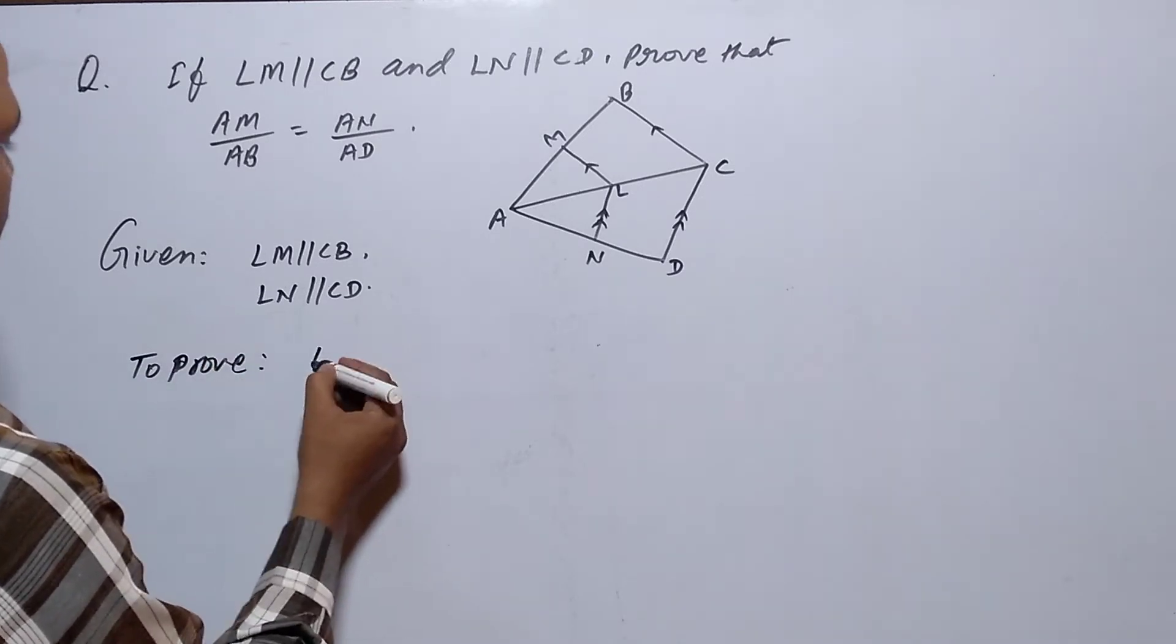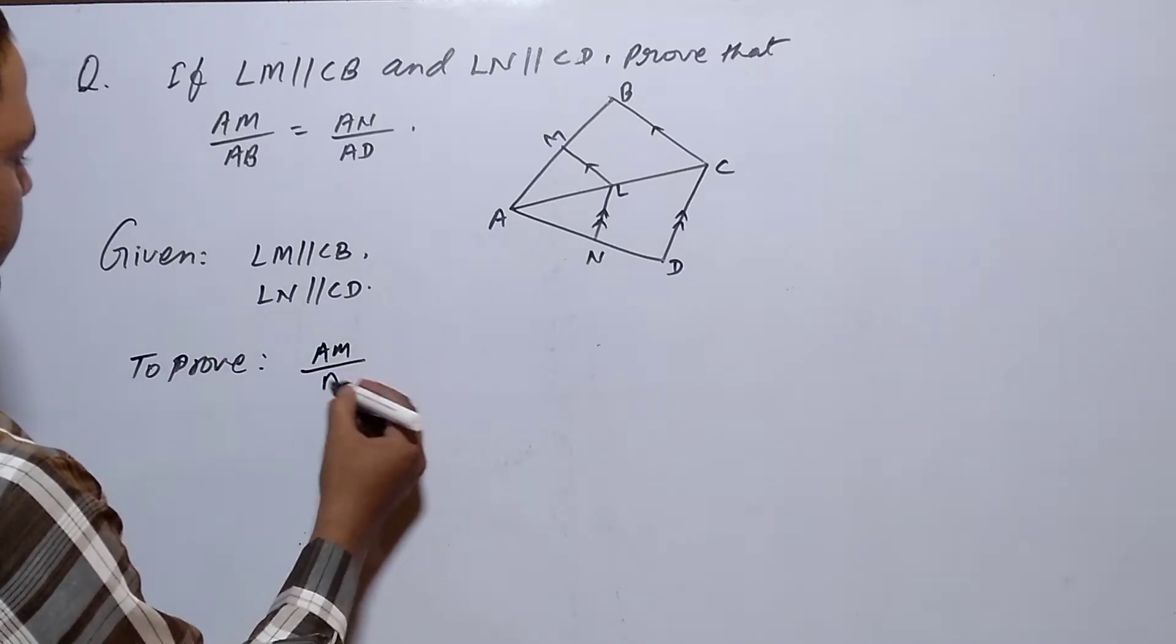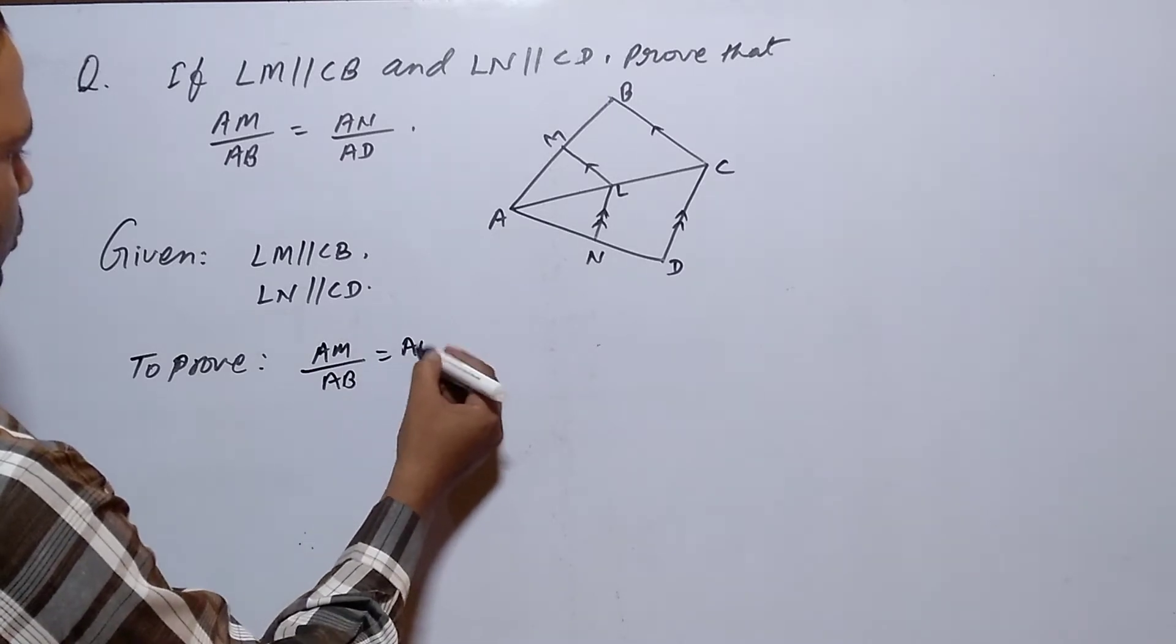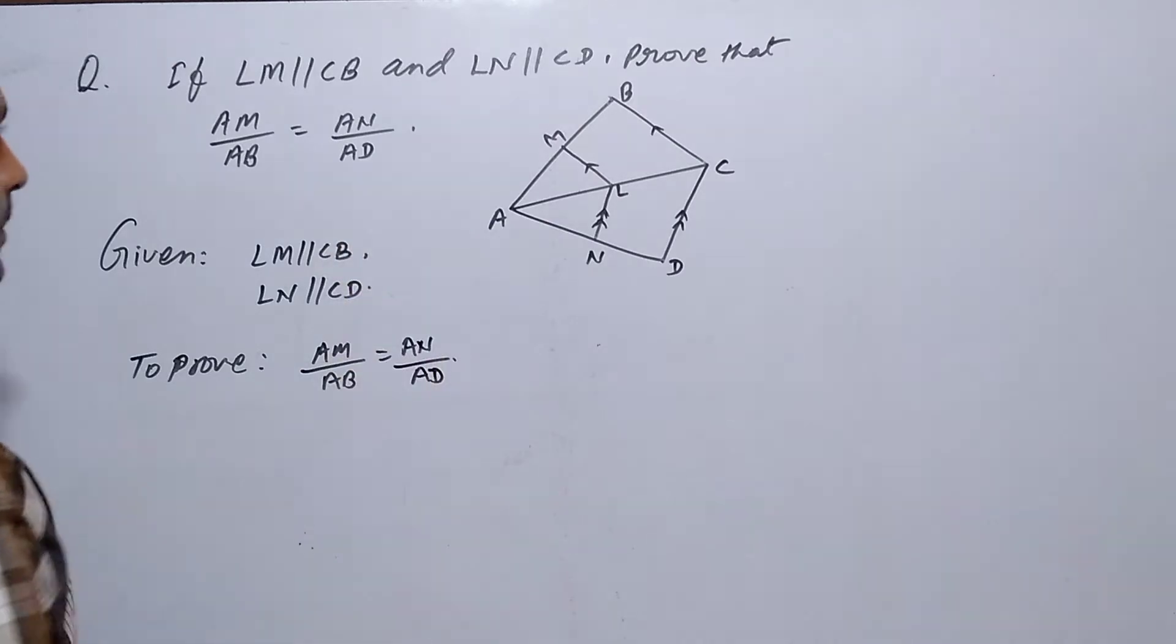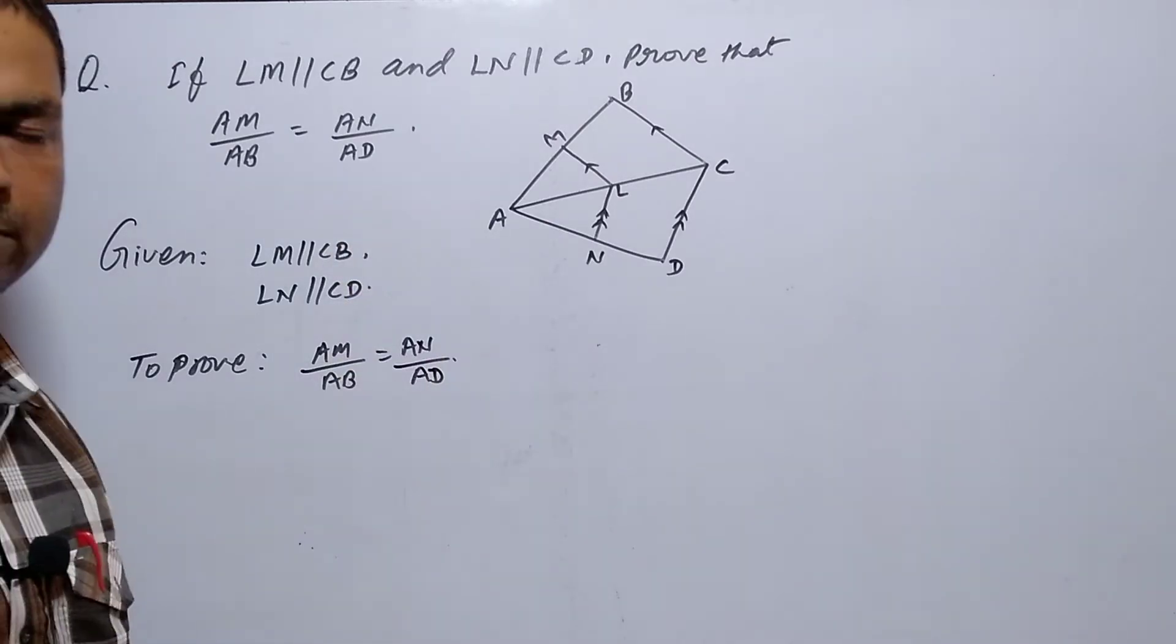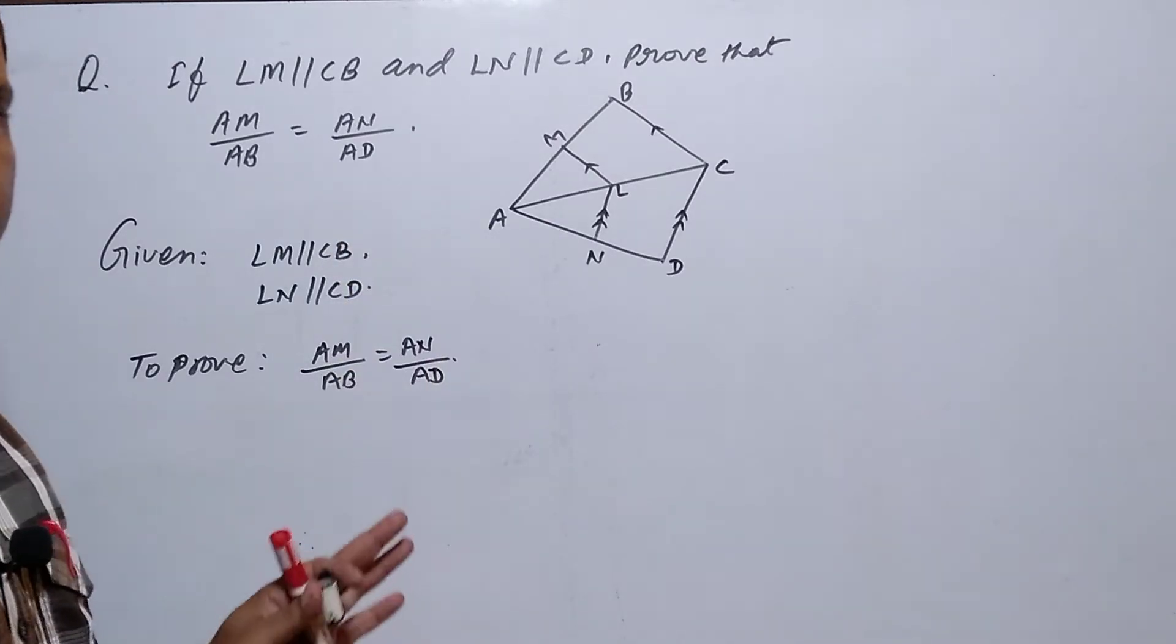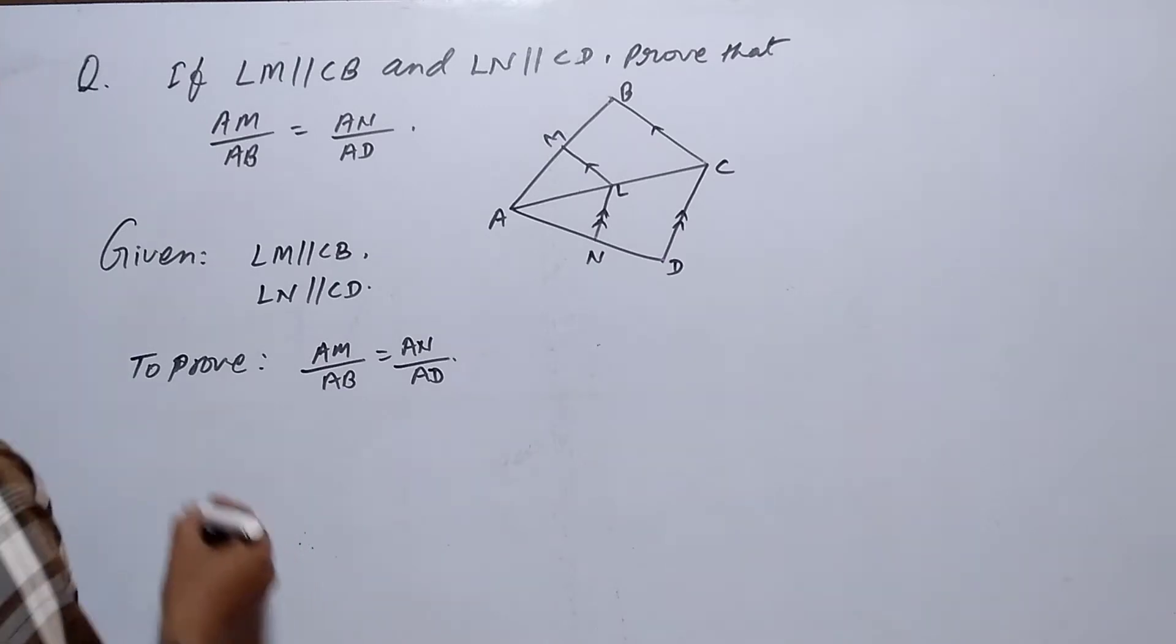So AM by AB is equal to AN by AD. If there is no construction requirement, let's prove it.